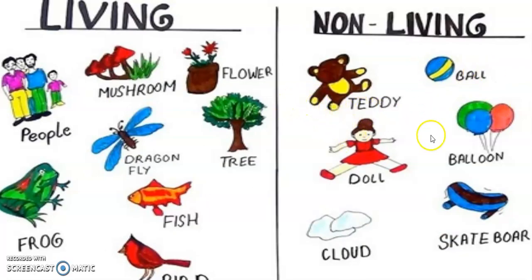Non-living things include things that don't eat or reproduce, like a car. A car doesn't eat to grow. It doesn't move unless a person is driving it.